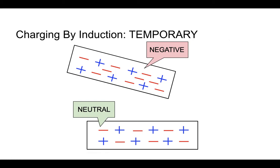Here we are going to take a look and hopefully understand why a negatively charged object is attracted to a neutral object. We're going to take a look at this object here — this is a negatively charged object. You can see we have a lot more negative charges in here than we do positive charges. Down here is a neutral object, and we can see there are the same number of positives as there are negatives. So as a result, this is a neutral object.